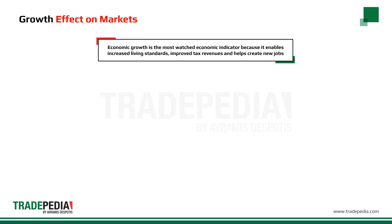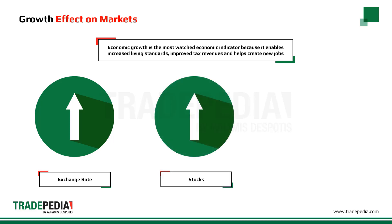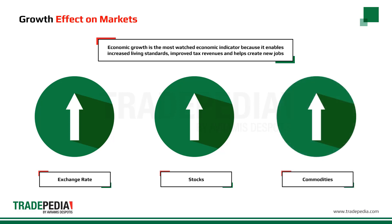All else equal, higher output and higher income will increase government revenues and thus the value of its currency. When it comes to stocks, an increase in growth reflects increasing consumer demand, which results in higher profits for businesses and higher stock prices. Because businesses are producing more, their demand for commodities like raw materials and energy will increase, resulting in higher commodity prices.